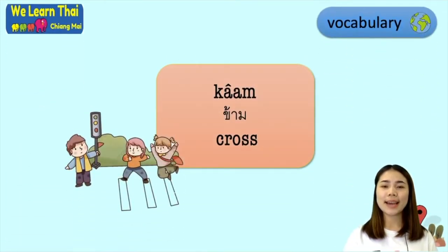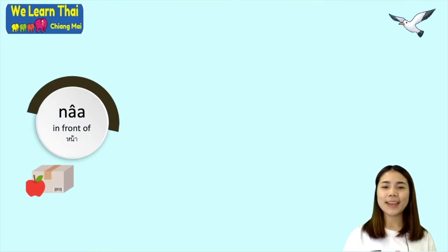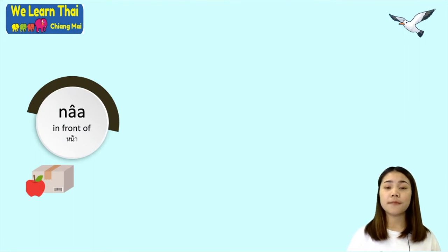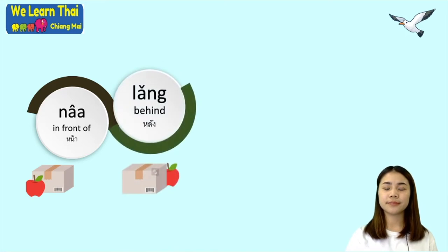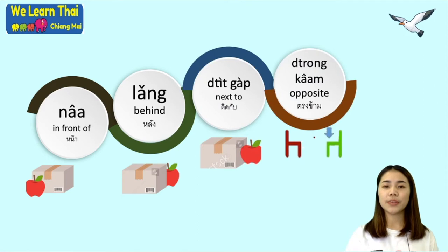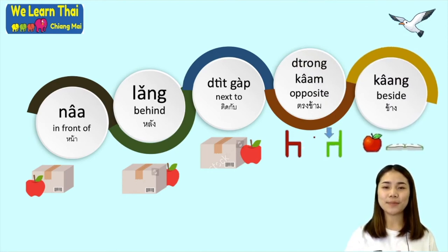Next is 'kam'. When you want to use a preposition, the first one is 'in front of', which you can say 'na'. Then 'nha lang' means behind. 'Tic gap' means next to. 'Trong kam' means opposite. Or you can say 'khaan', which means beside.